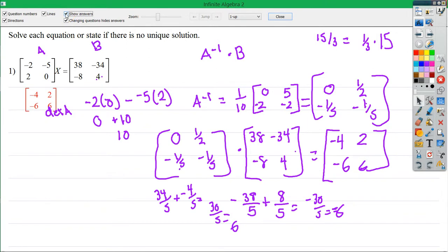So my final answer is negative 4 and 2, negative 6 and 6, and that's how you do one-step matrix equations that have matrix multiplication in them.